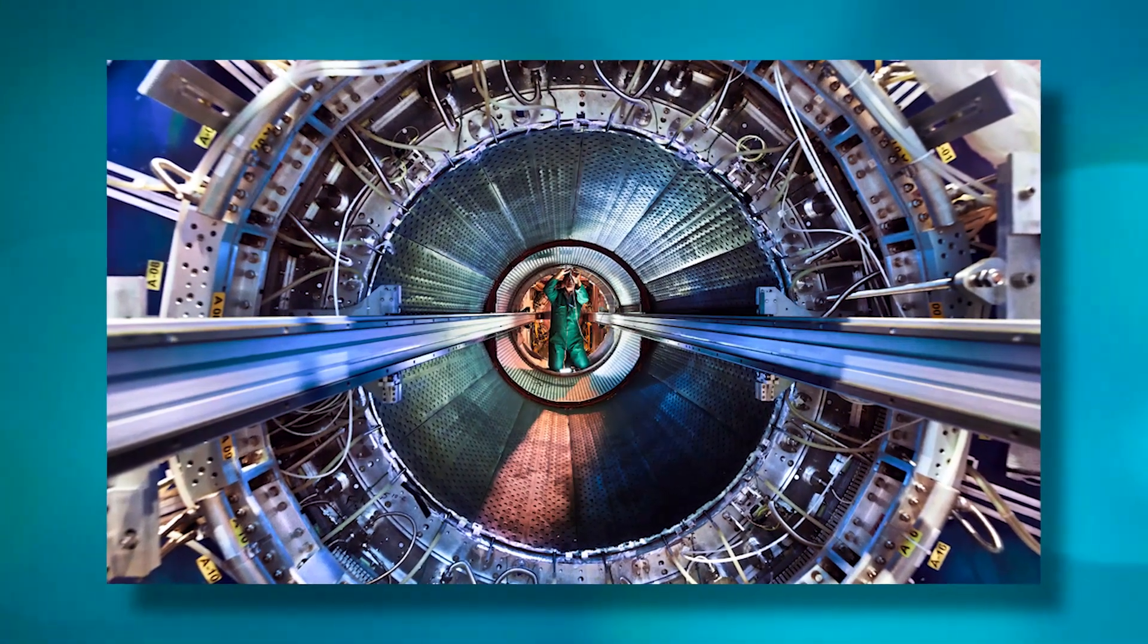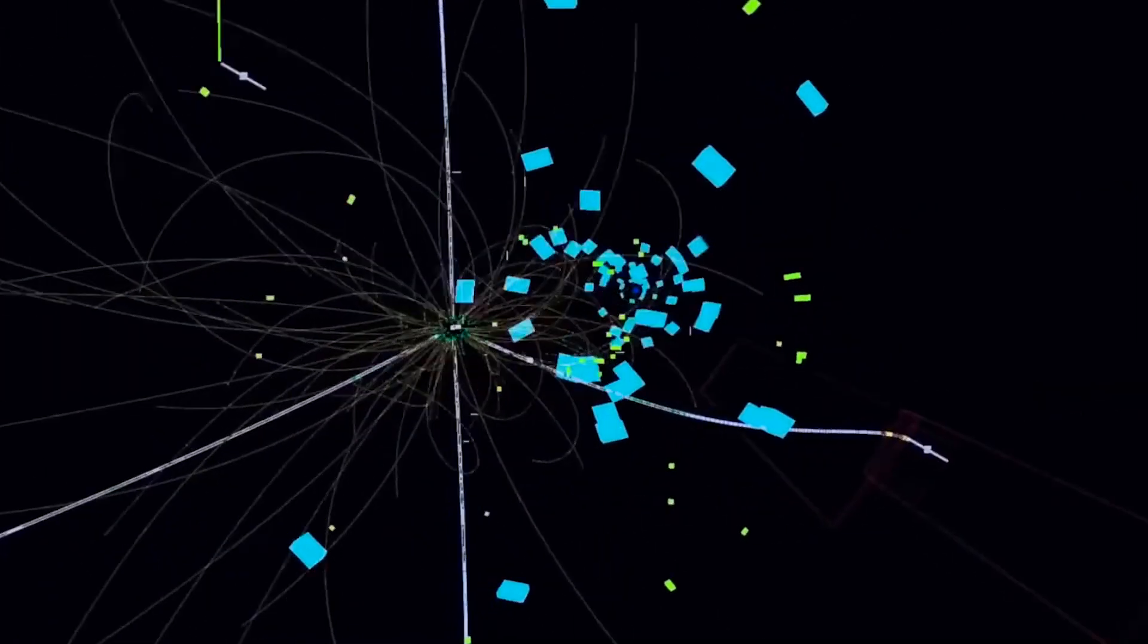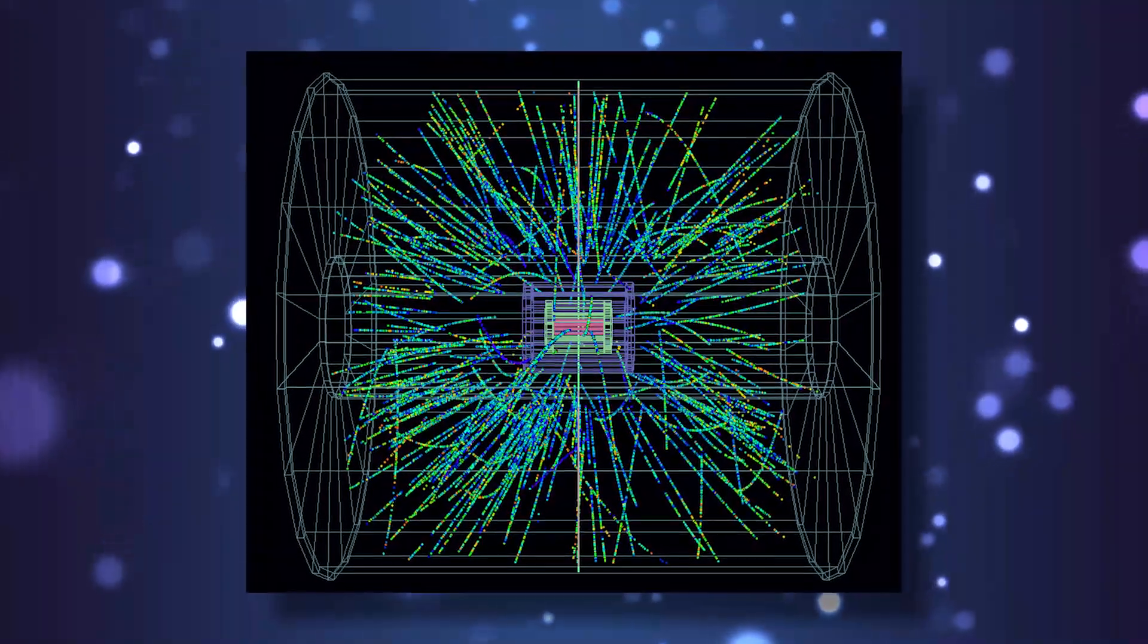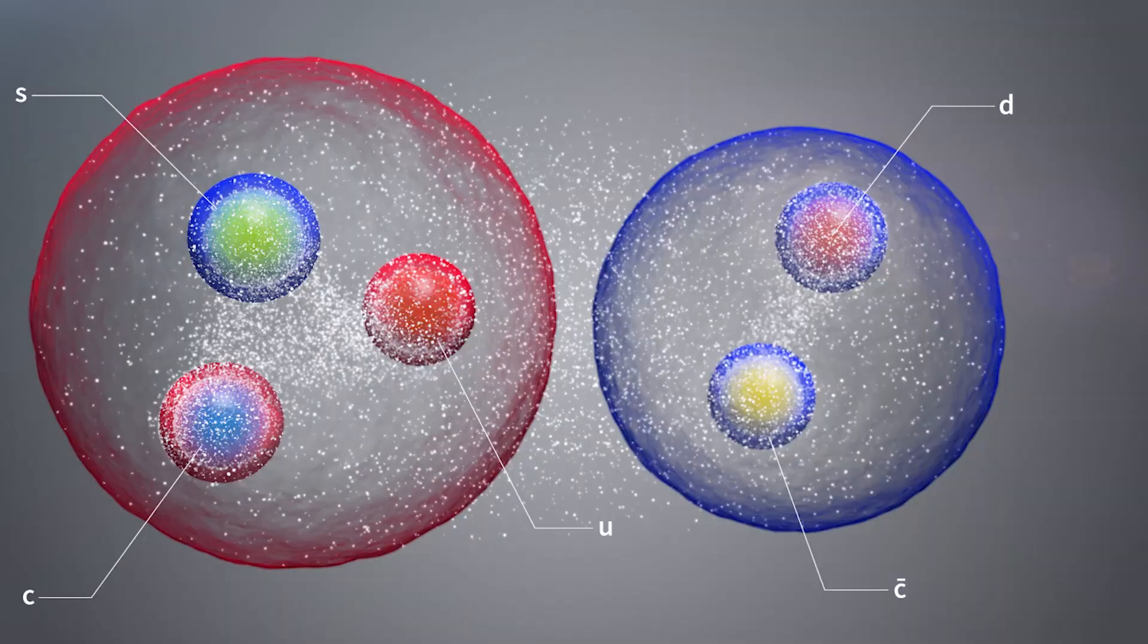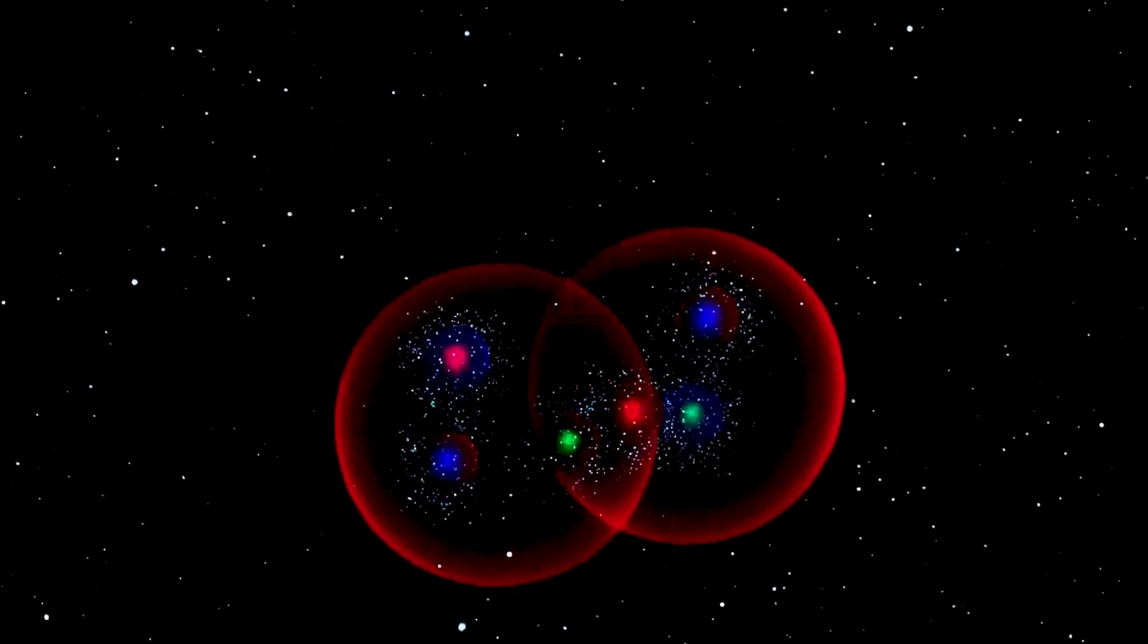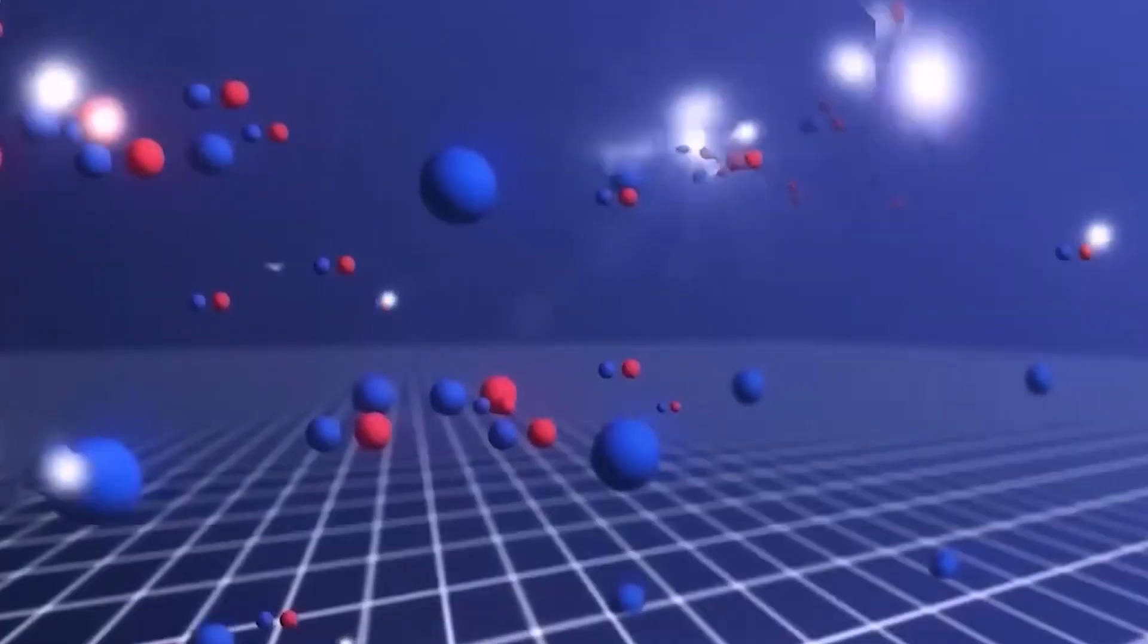Quarks are fundamental building blocks of matter, most commonly found inside protons and neutrons, which make up the nucleus of each atom in the universe. Protons and neutrons mainly consist of two types of quarks, called up and down quarks. The heavier duplicates of the up quark are called charm and top quarks. The duplicates of the down quark are named strange and bottom quarks.